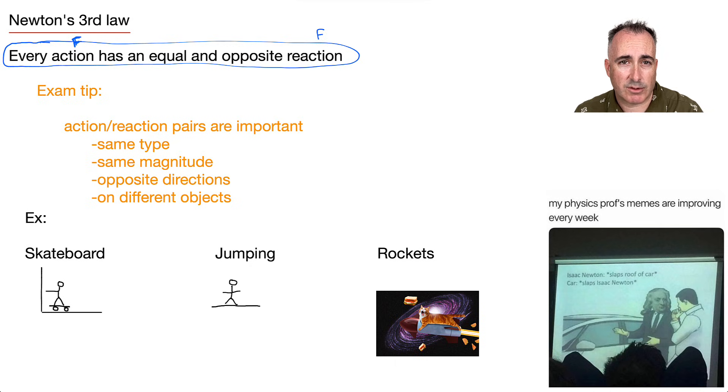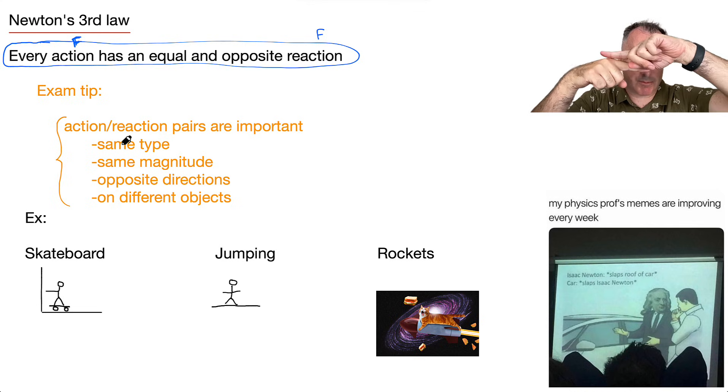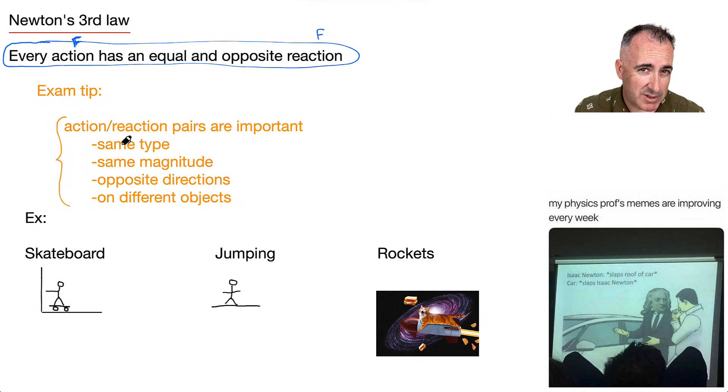So here's an exam tip right here. Action-reaction pairs, they're important. You could actually be asked which one is an action pair. So it's important to know that it has to be the same type of force, has to be the same magnitude. In other words, if you push something, it pushes you back. Has to be opposite direction. So if one pushes this way, it has to be the opposite. And it has to be on different objects. In other words, if two different forces act on one object, they're not action-reaction pairs. So if they're asking for that, then it won't be that.